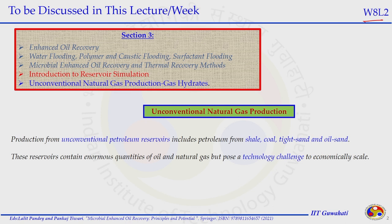Briefly, I will be discussing some of the unconventional natural gas resources. The production from unconventional petroleum reservoirs includes petroleum from shale, coal, tight gas, and oil sand. The hydrocarbon — oil and gas — can be produced unconventionally from various sources. These reservoirs contain enormous amounts of oil and gas, but the technology applied to recover these resources is not commercially economical. Hence, the challenges on the technical side still need to be improved.